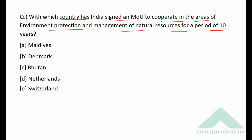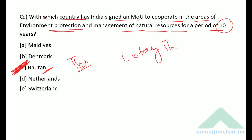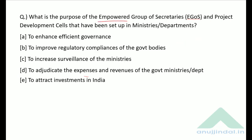With which country has India signed an agreement in the energy sector for ten years? The correct answer is option C — Bhutan. The capital of Bhutan is Thimphu and Lote Tsering is the Prime Minister of Bhutan.